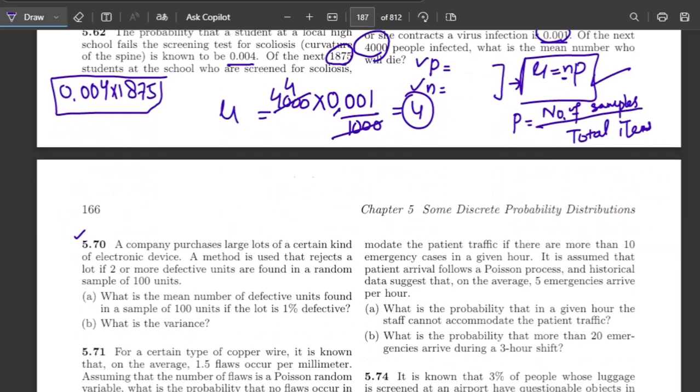Now question 5.70: a company purchases large lots of a certain kind of electronic devices. A method is used that rejects a lot if two or more defective units are found in a random sample of 100 units. So part a: what is the mean number of defective units found in a sample of 100 units if the lot is one percent defective? Here this one percent is the probability, and from it I can find it out by 1 by 100, this is 0.01. And the number of items here are n which are 100.